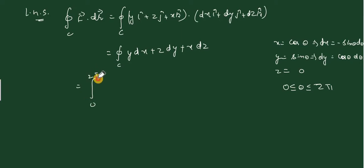This implies dy equals cos theta d theta, z equals 0 as the projection is on xy plane, and theta varies from 0 to 2 pi.